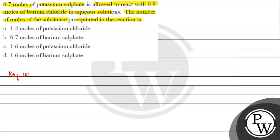The key concept for this question is: potassium sulfate is given, and if we look at the reaction of potassium sulfate with barium chloride, basically what formation will we get? We will get a precipitate of barium sulfate, and potassium chloride will also be formed.